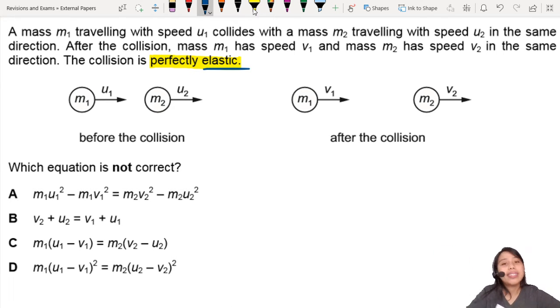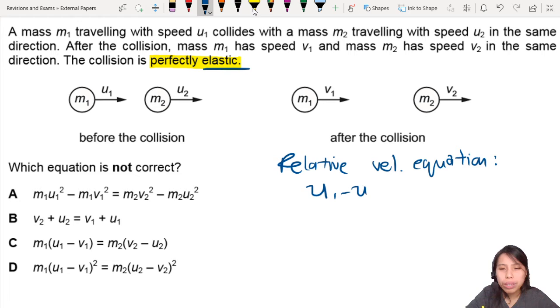Now, when it is an elastic collision, you can use what we call the relative velocity equation. And this will save us so much time in trying to decide what equation works best. So the relative velocity equation, by the way, is just u1 minus u2 equals to v2 minus v1.